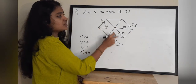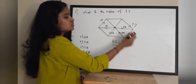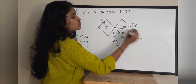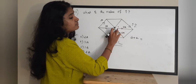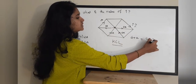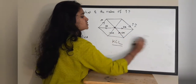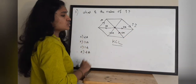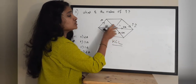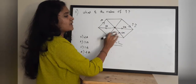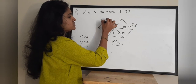Kirchhoff's Current Law states that the current flowing into a node equals the current flowing out of the node. If you examine the central node, two currents are coming in: 6 ampere and 2 ampere, which sum to 8. The currents leaving the node are 5 ampere and 3 ampere, which also sum to 8. So KCL is satisfied for the central node.